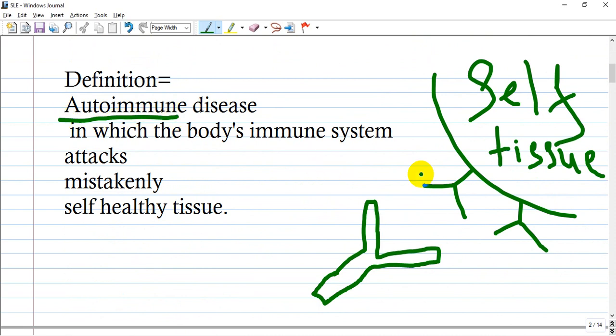Generally speaking, this occurs when the body's immune system recognizes self tissue as a stranger or something that is not self for our own body, and it mistakenly starts to attack the self-healthy tissue.